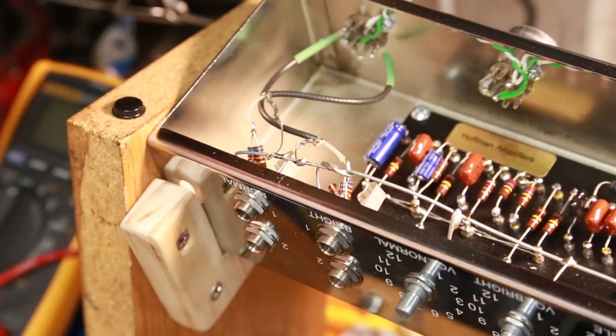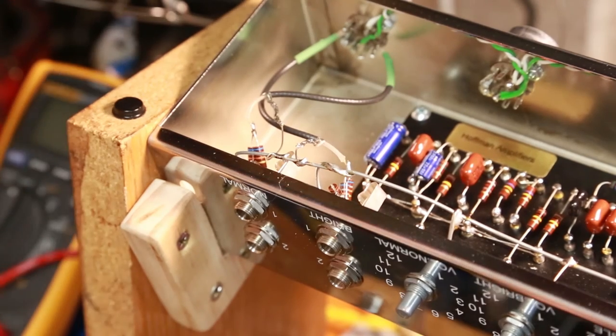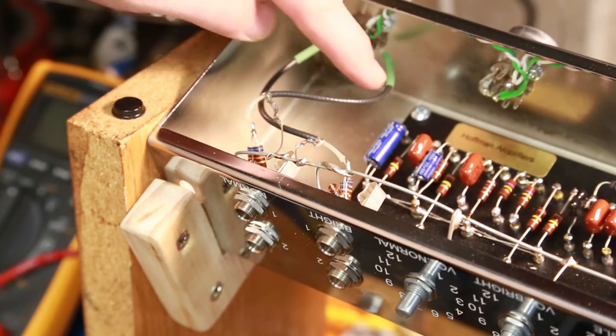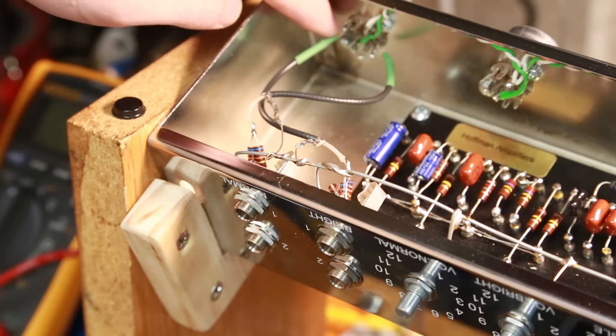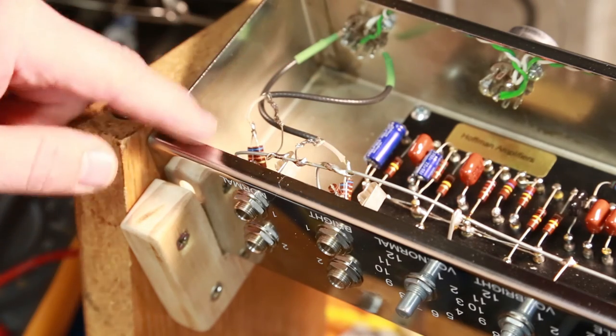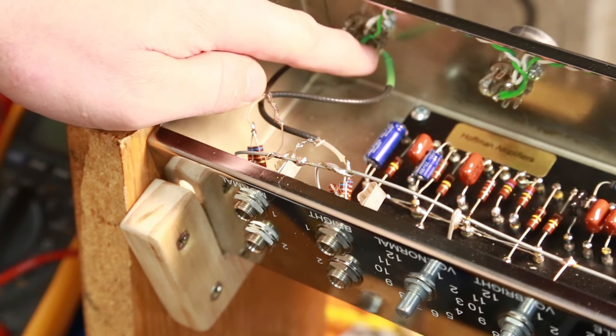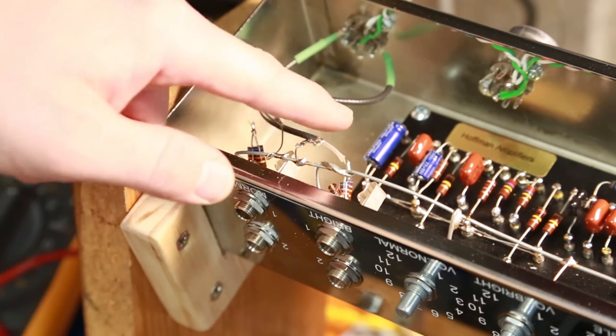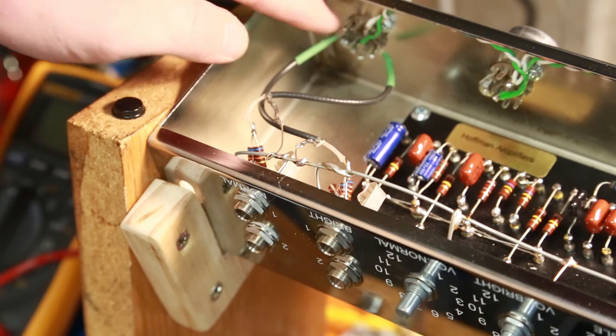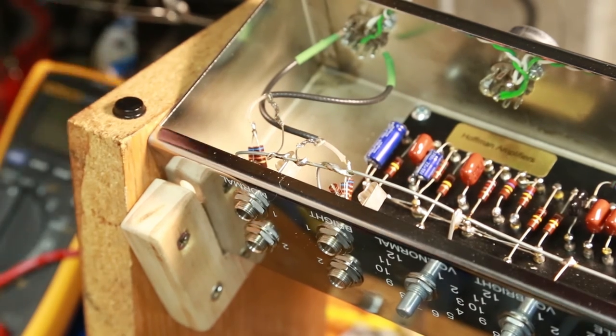As you can see, I've got my jacks all wired in, and the inputs to them. So the one input comes over here to pin seven, and the normal input goes into the first one, which would be two, the grid of the first half of the triode, and the second one goes into pin seven, which is the second grid of the second triode, or the second grid of that triode.